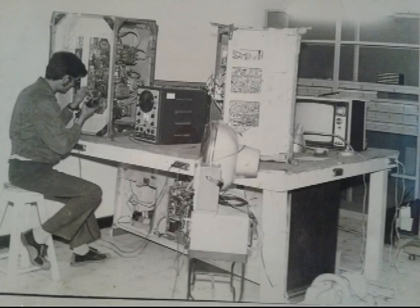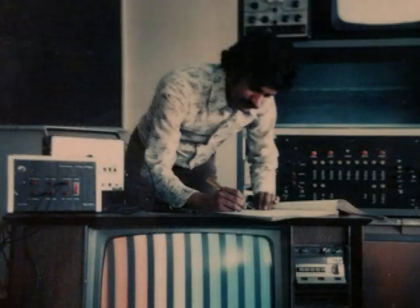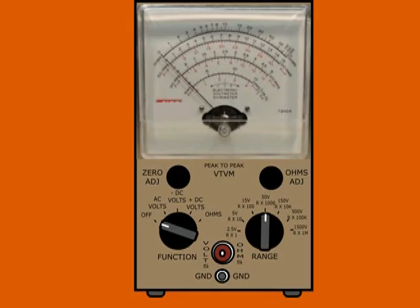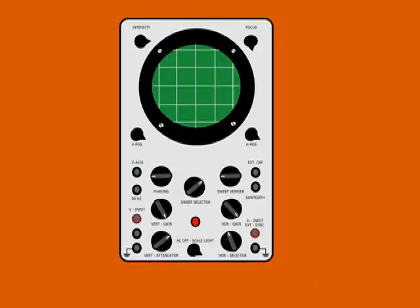Back in the 60s, we made extensive use of two measuring instruments when repairing radio and television receivers: the vacuum tube voltmeter and the oscilloscope.